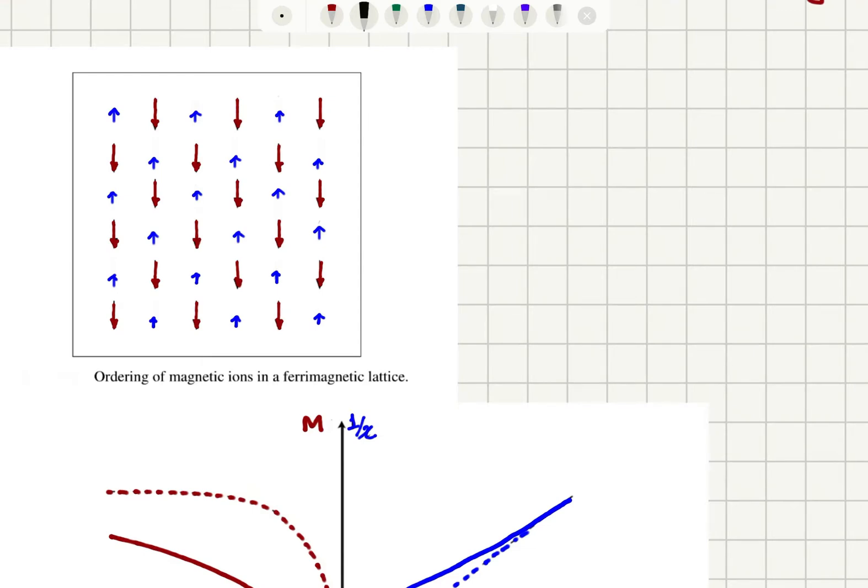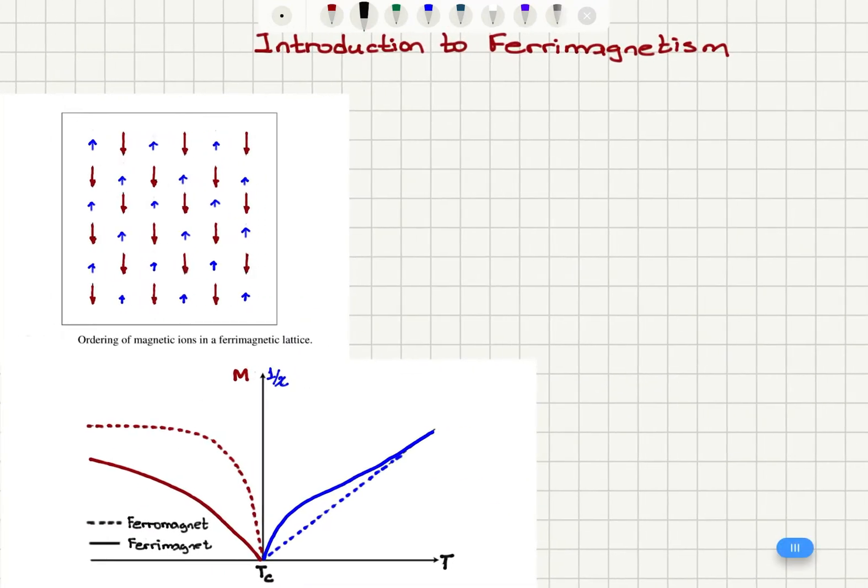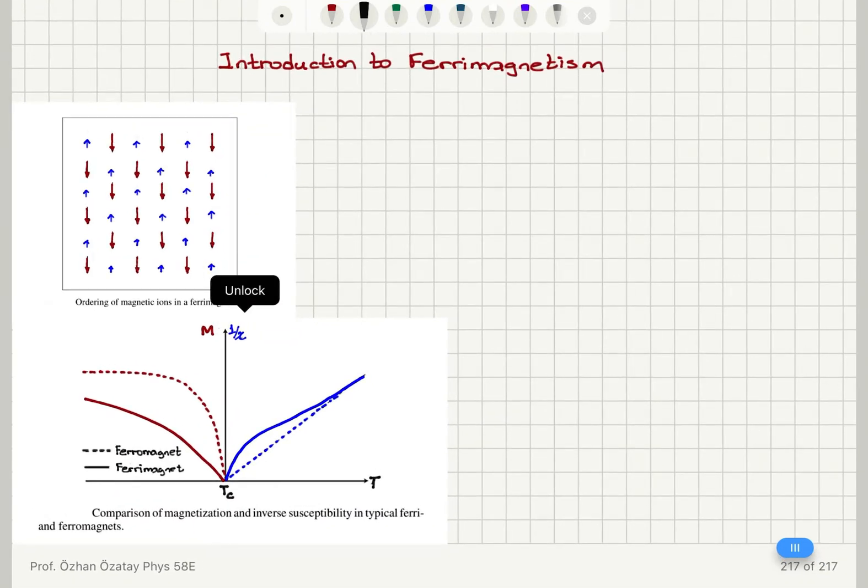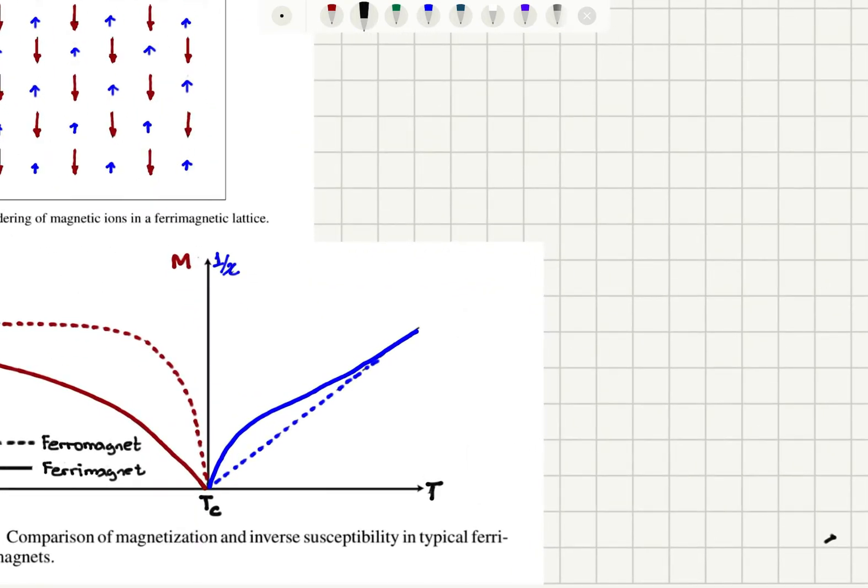You can see that the two sublattices have unequal magnetization so they don't exactly cancel out. If we look at magnetization and the susceptibility temperature dependence, after the Curie temperature, 1 over chi is proportional to T minus theta, which is this linear behavior here. On the other hand, the ferrimagnets have a slightly different behavior.